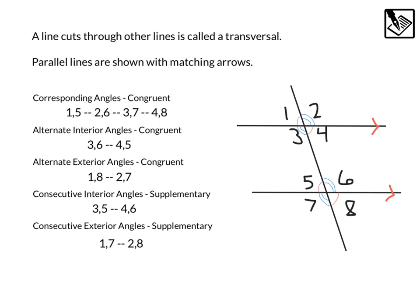Our corresponding angles are the ones that are skipping over one and kind of directly across from each other. 1, 5, 2, 6, 3, 7, and 4, 8. And we can see that all of those are congruent.